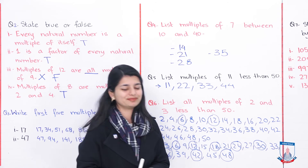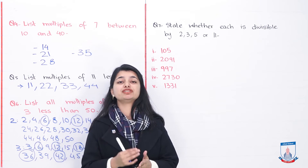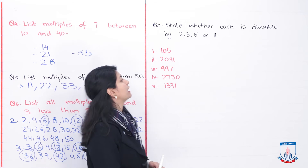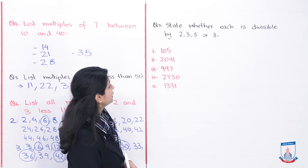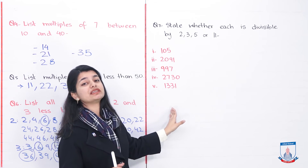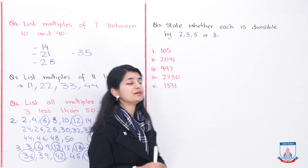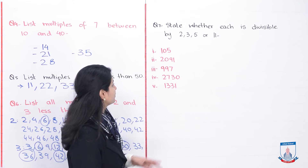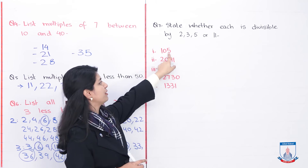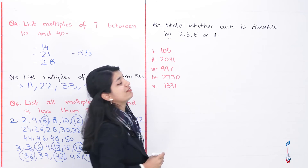The next question is about divisibility tests, which we have already studied — now we apply them. State whether each number is divisible by 2, 3, 5, or 11. The first number is 105. Can 105 be divisible by 2? No, because it ends in 5, which is not an even number, so it cannot be divisible by 2.